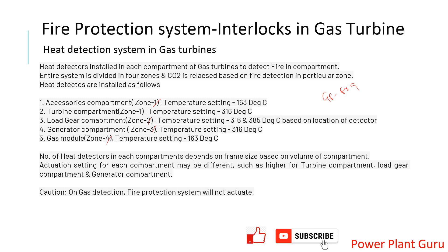There is naturally a temperature difference between the accessory compartment and the turbine compartment, since combustion is happening and the turbine casing is there. That is why we keep different setpoints for temperature sensors in different compartments. For example, in Zone 1, which includes the accessory and turbine compartments, the temperature settings are different: 163°C for the accessory compartment and 316°C for the turbine compartment, since it normally runs at a higher temperature. Similarly, Zone 2 is the load gear compartment, which is also a high-temperature area and has its corresponding setting.